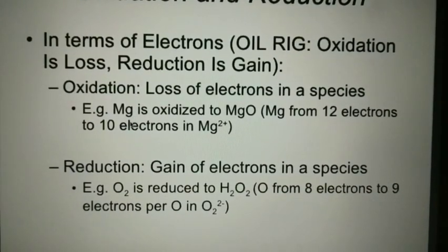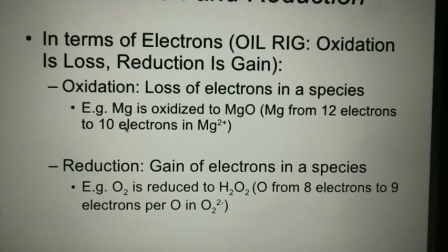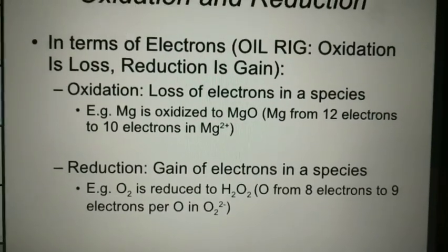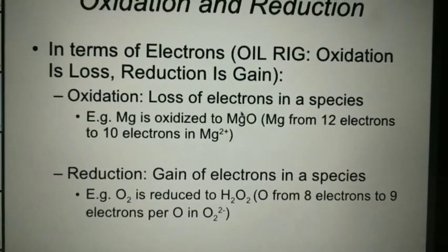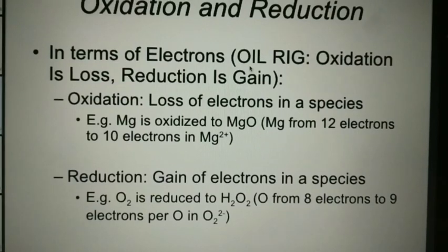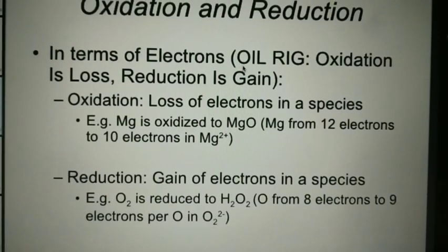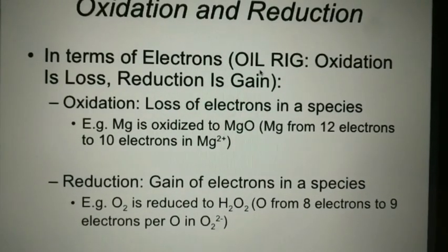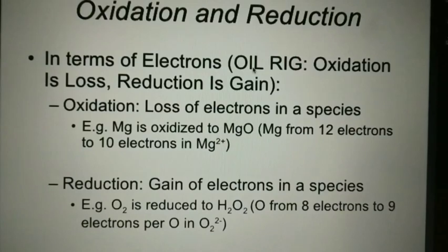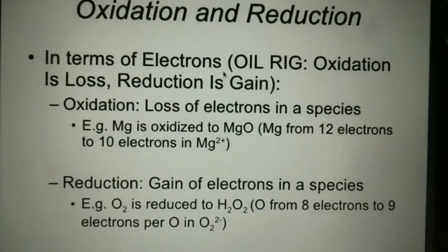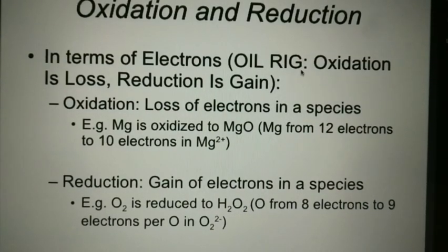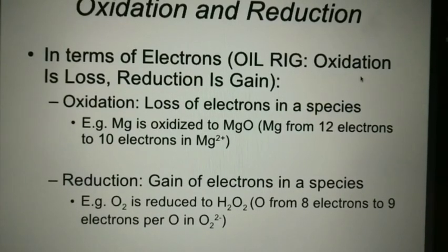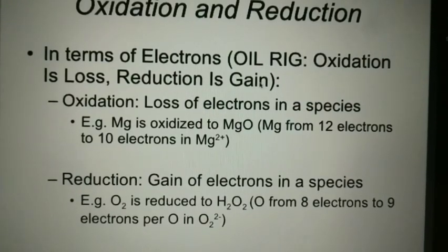In terms of electrons, the short form to remember is OIL RIG. OIL means oxidation is loss of electrons. RIG means reduction is gain of electrons. So you can remember that oxidation is loss of electron and reduction is gain of electron.